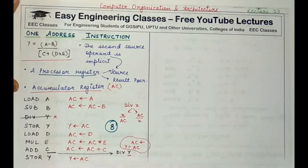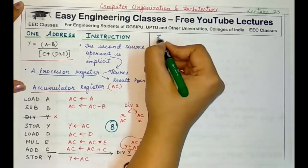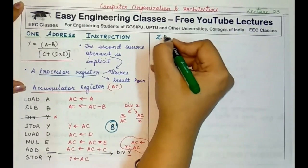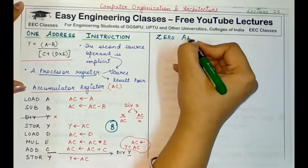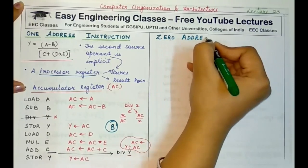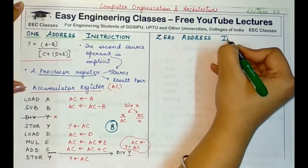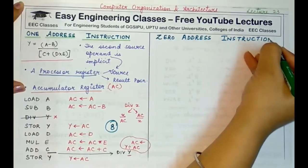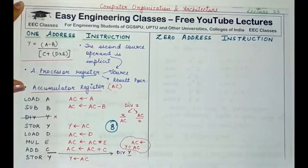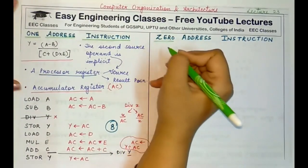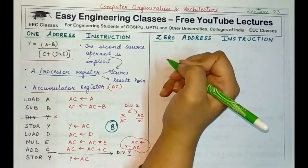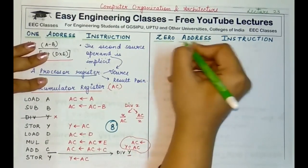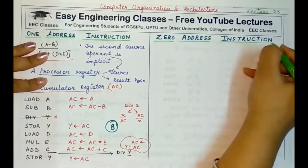Now coming to the last type: zero address instruction. A zero address instruction means we do not have to specify any address in the instruction — the address is automatically understood. The processor already knows which address or scenario will be used. This is called a zero address instruction.